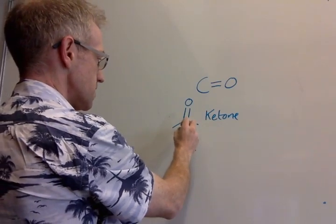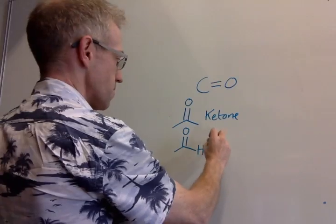If one of the side chains is an H, then we have an aldehyde.